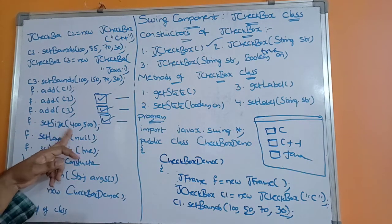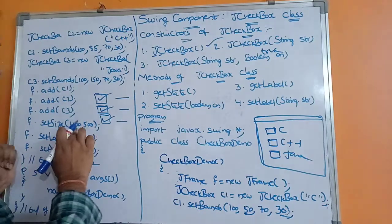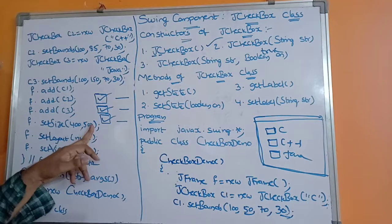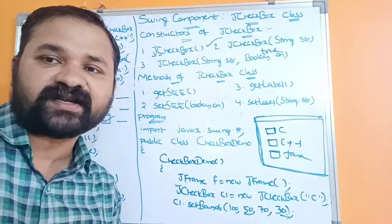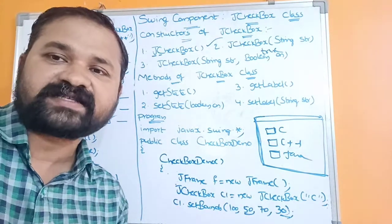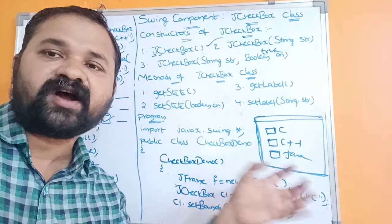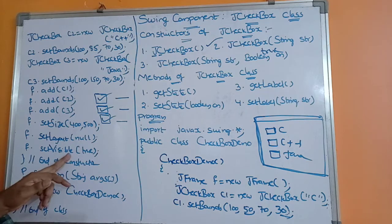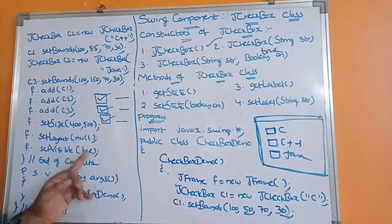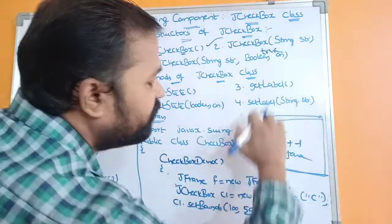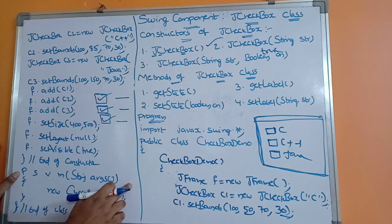To specify the size of the frame we use f.setSize(400, 500) — where 400 is the width and 500 is the height. Next, f.setLayout(null) — we are not using any layout manager, so null is specified. We have different layout managers like FlowLayout, BorderLayout, CardLayout, and GridLayout, but here we use none. Finally, f.setVisible(true) makes the frame visible, since initially the frame is in an invisible state.